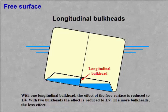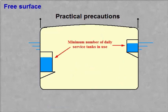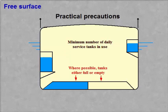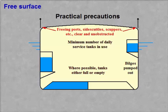Practical precautions in order to reduce the effect of free surface: Minimum number of daily service tanks in use. Where possible, tanks either full or empty. Bilges pumped out. Freeing ports, side scuttles, scuppers, etc., clear and unobstructed.